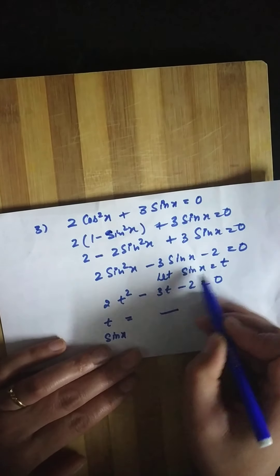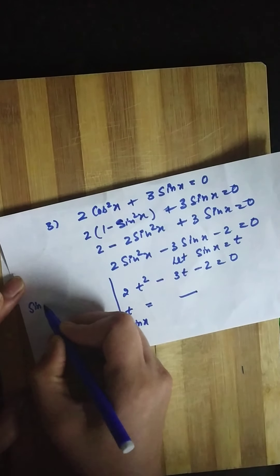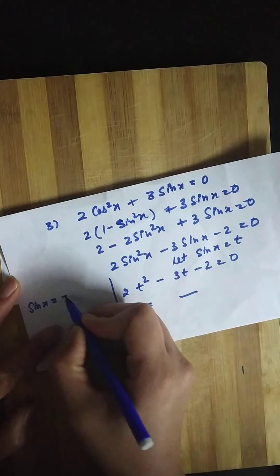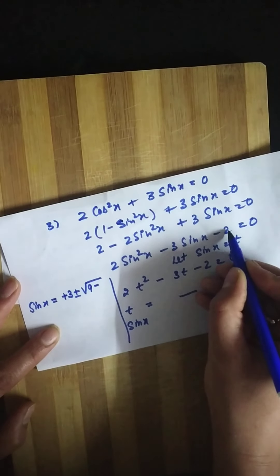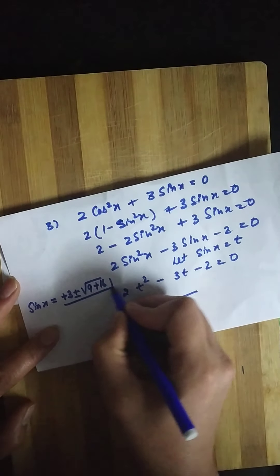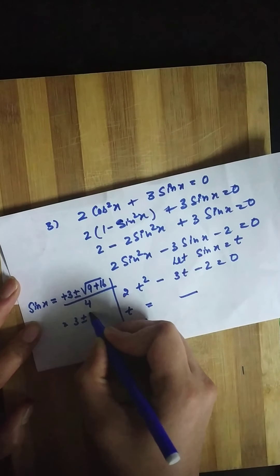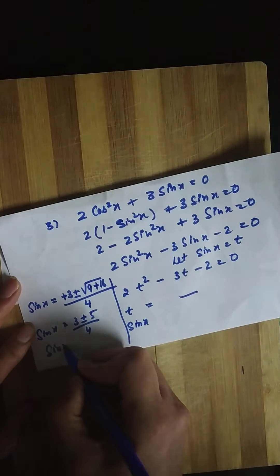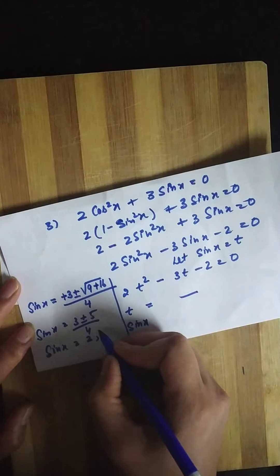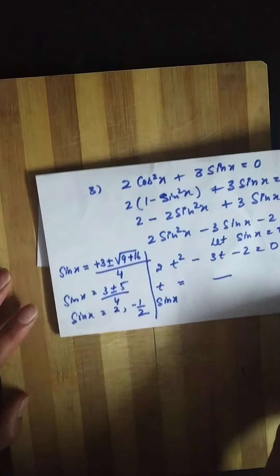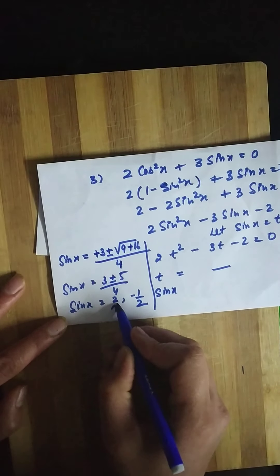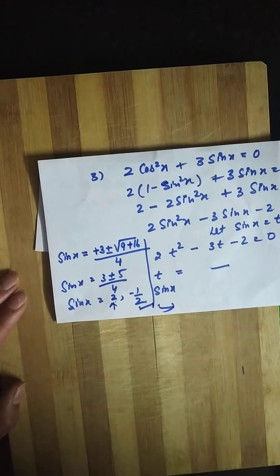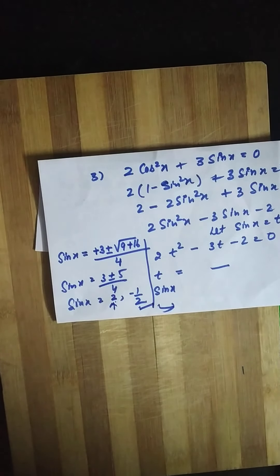There's no need to substitute t — you can directly use the quadratic formula: sin x = (−b ± √(b²−4ac)) / 2a, giving (3 ± √(9+16)) / 4 = (3 ± 5) / 4. This gives two values: sin x = 8/4 = 2, or sin x = −1/2. Since sine cannot exceed 1, the value of 2 is discarded, and we proceed with sin x = −1/2 to find the general solution.